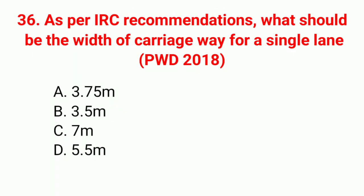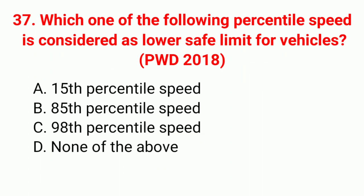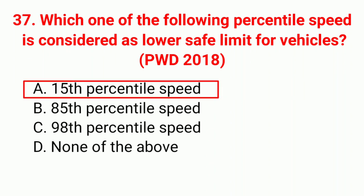Question 36: As per IRC recommendation, what should be the width of carriageway for a single lane road? Correct answer A: 3.75 m. Question 37: Which percentile speed is considered as the lower safe limit for vehicles? Correct answer A: 15th percentile speed.